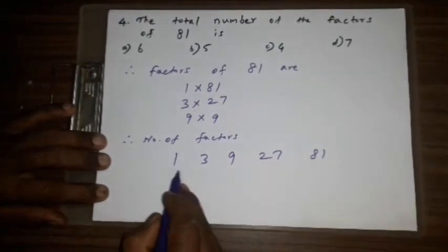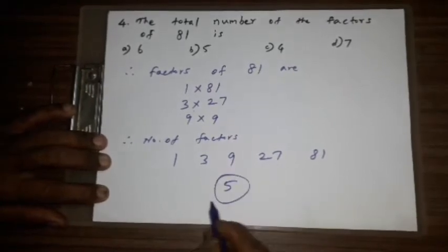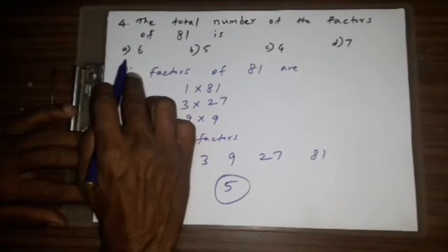So 1, 2, 3, 4, 5. 5 is the correct answer. A, B: 5 is the correct answer.